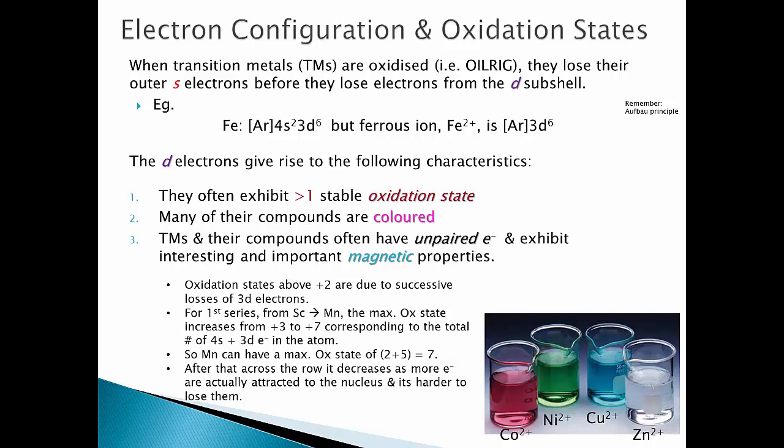As an example, iron without a charge has the argon configuration plus 4s2 3d6. When we have ferrous iron, Fe2+, we're losing two electrons to get that two positive charge. We lose those 4s2 electrons, so we end up with argon and then 3d6.